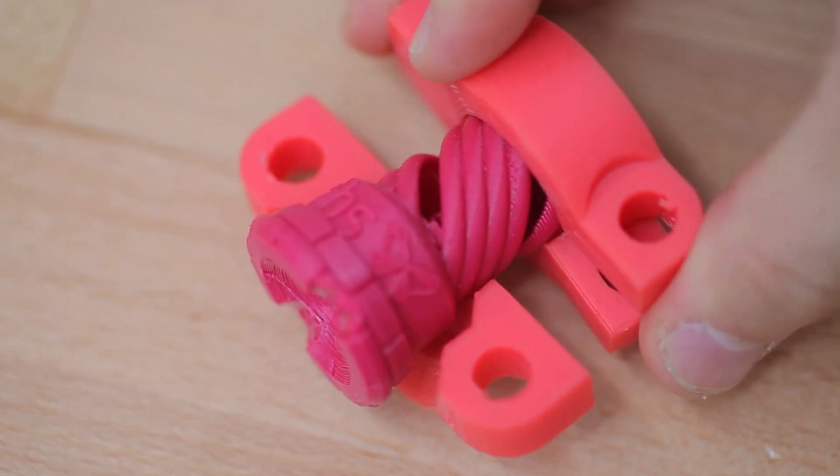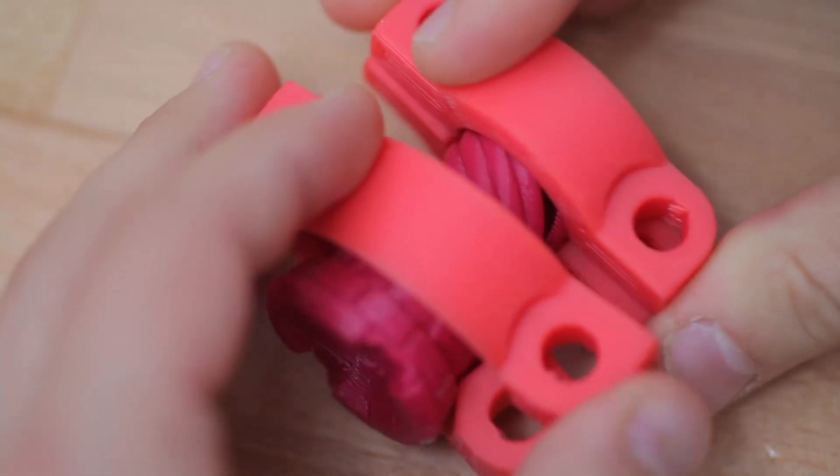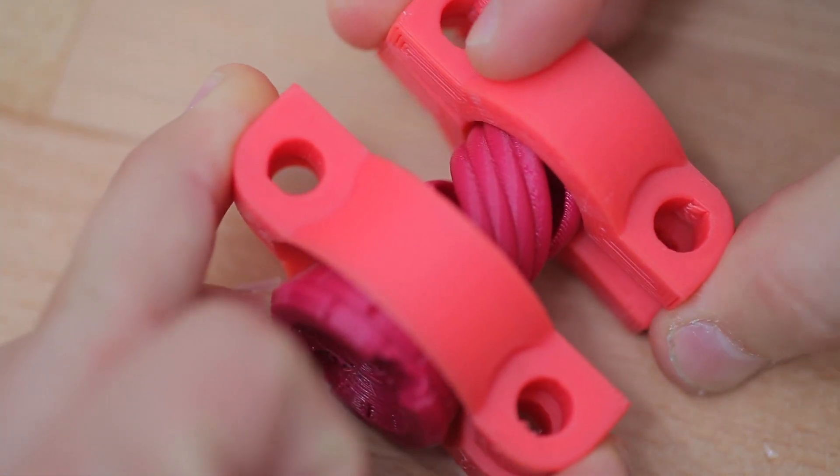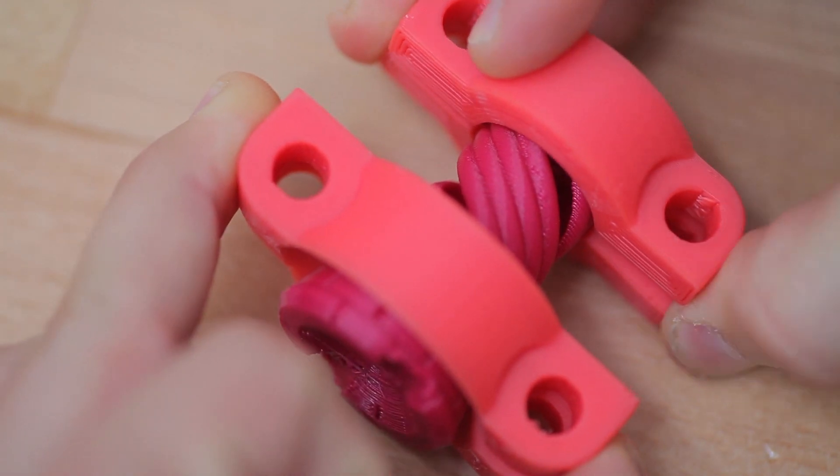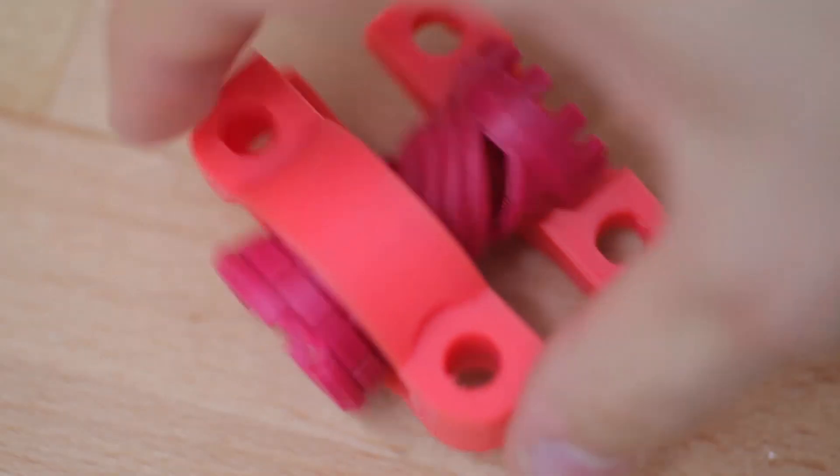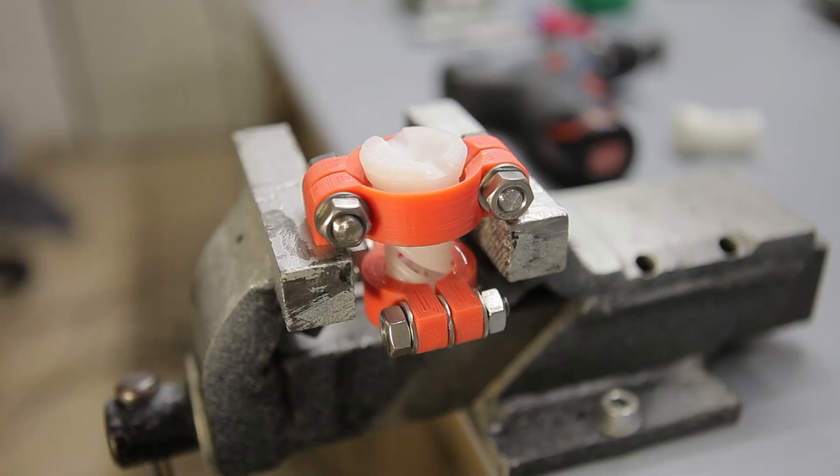The next torture device that I came up with was these two clamps that basically grab onto the top and bottom of this print, which I can then use to try and tear apart the center section.